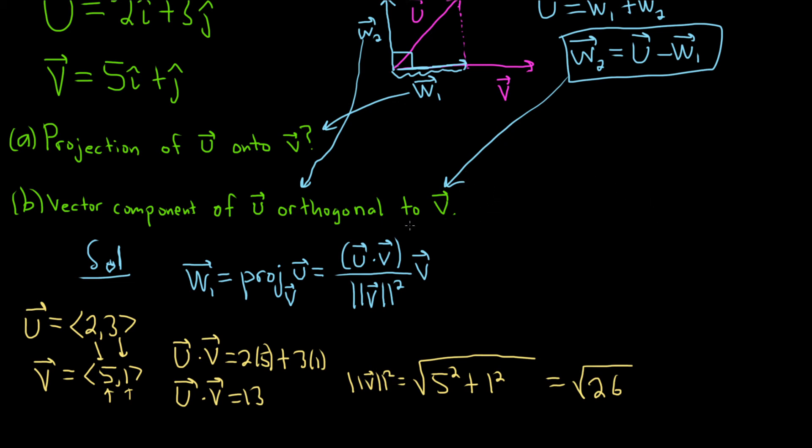I think we're good to go now. I think now we can just plug everything in to the formula. So this is equal to, u dot v, we said that was 13. And then the magnitude squared, that's the square root of 26. And then we have v. v is this 5, 1. So it'll be 5, 1.